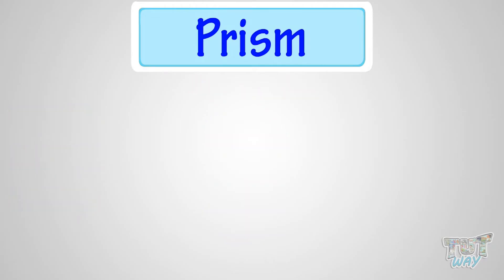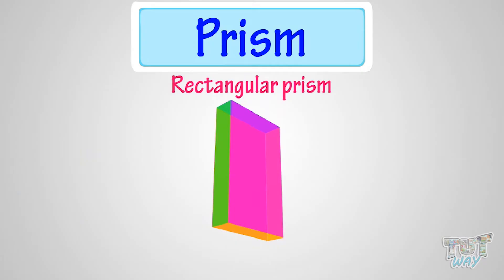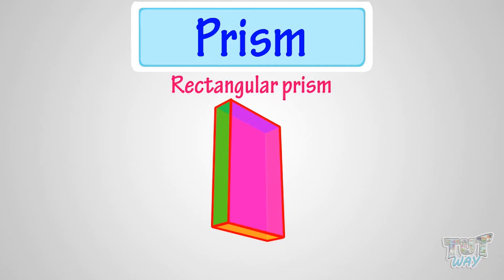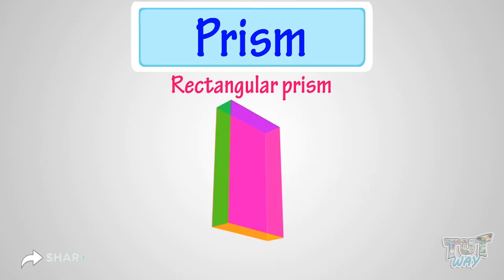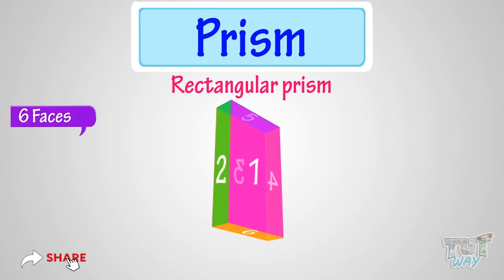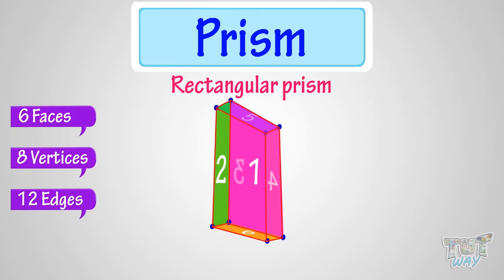This is a rectangular prism, because its top and bottom faces are rectangular, and all other faces are rectangular too. This is the same as a cuboid shape, so it has 6 faces, 8 vertices, and 12 edges.